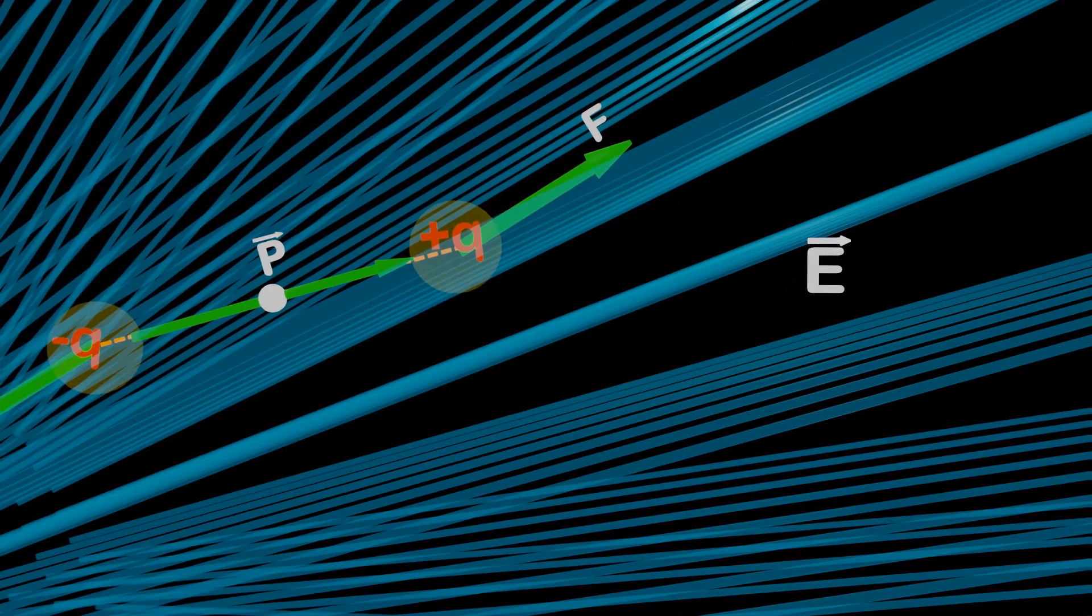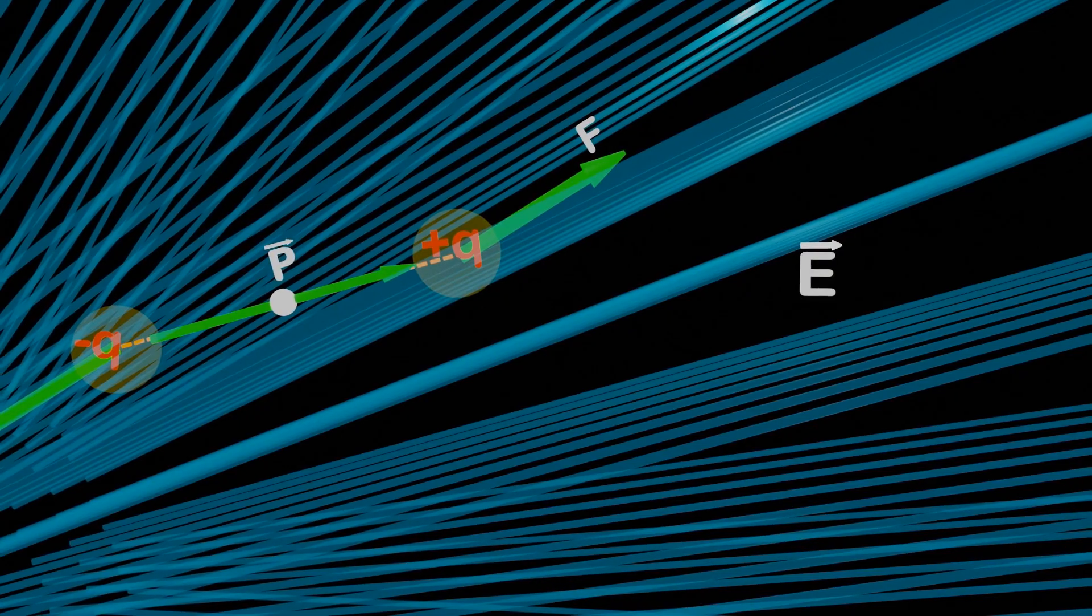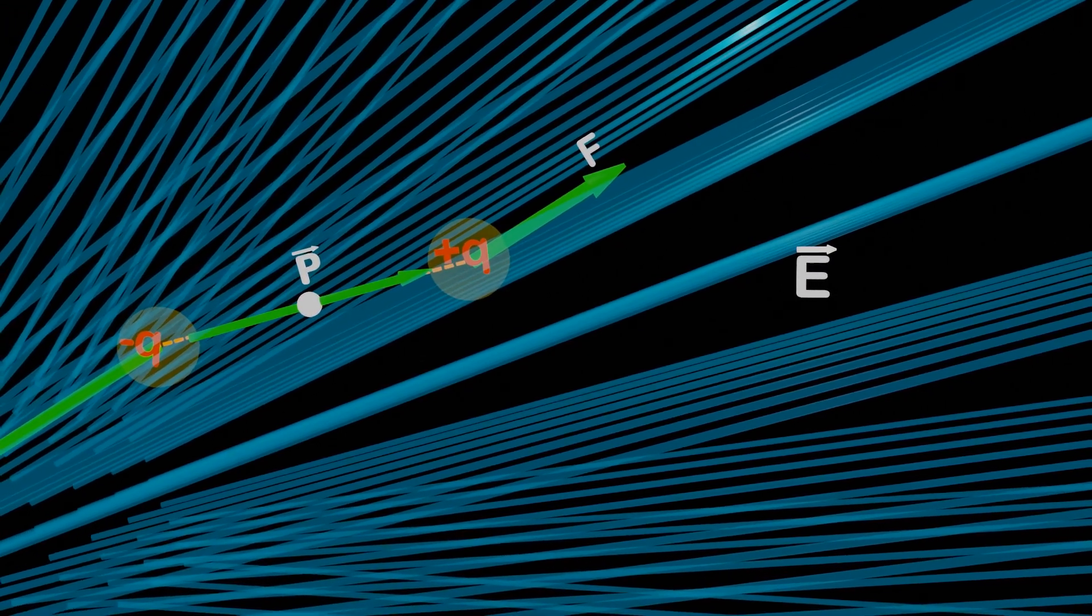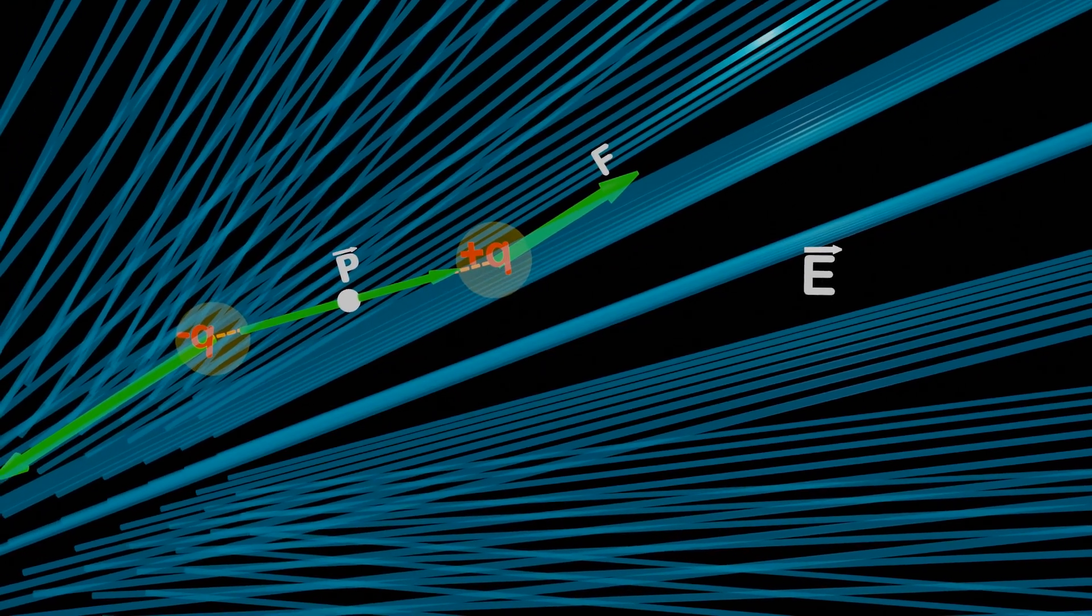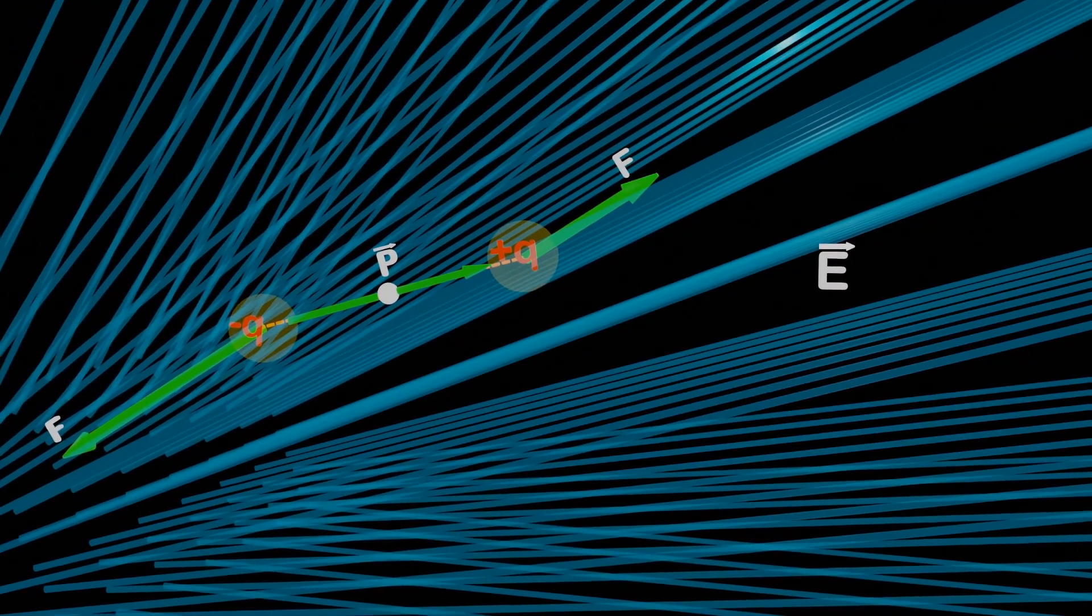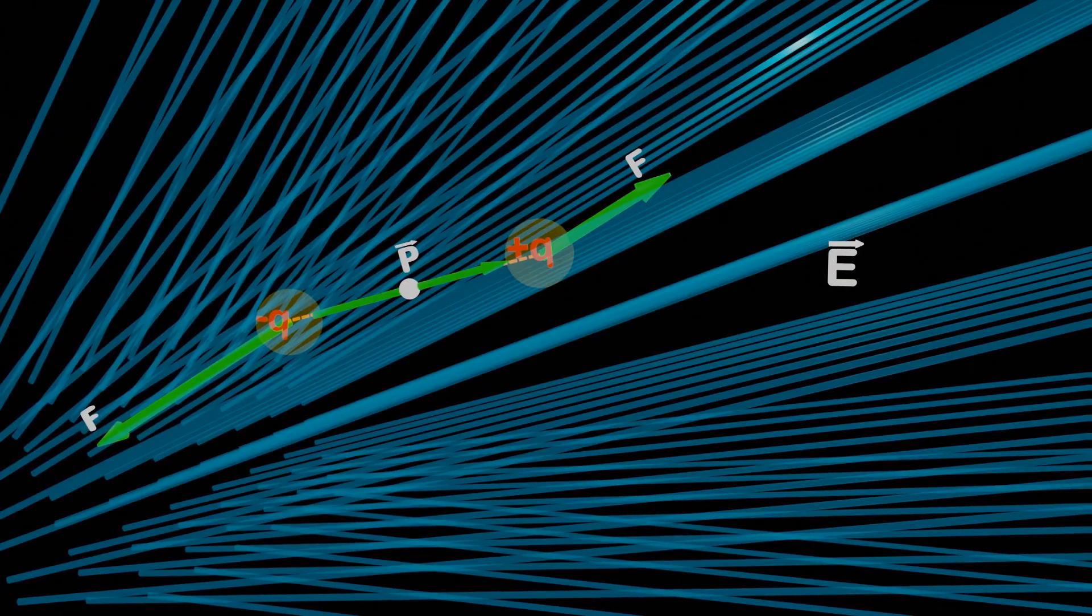It is important to note that the distance between the dipole is usually very small, making it unlikely for significantly different forces to act on each end. Additionally, in such a short distance, the uniformity of electric field is generally not considered. So that's all for this video, thank you so much for watching.